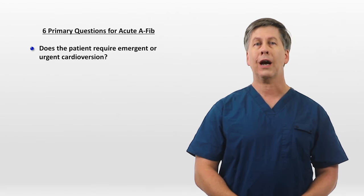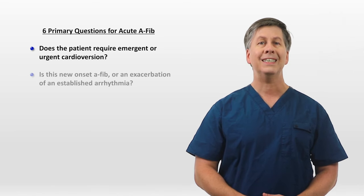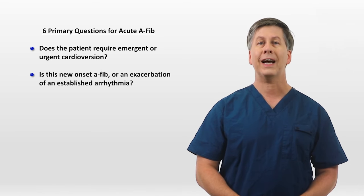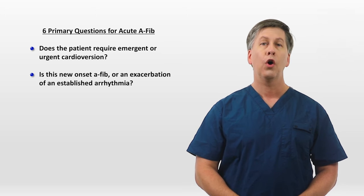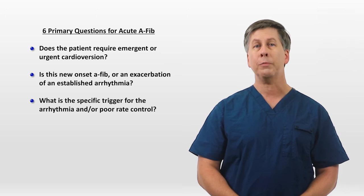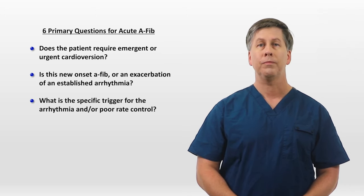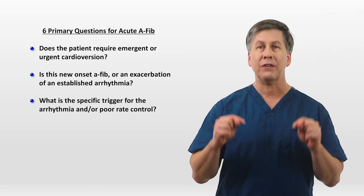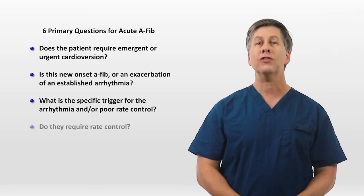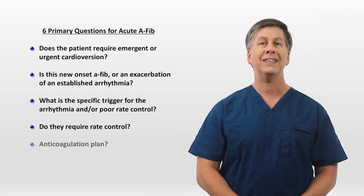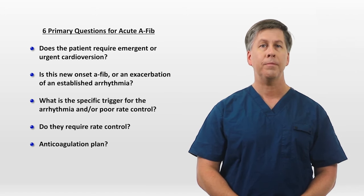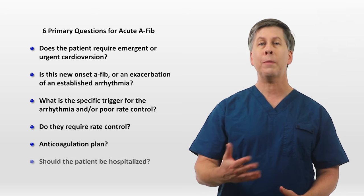The remainder of this video will cover six primary questions that the clinician needs to answer when caring for a patient with acute AFib: Does the patient require either emergent or urgent cardioversion? Is this new onset AFib or an exacerbation of an established arrhythmia? What is the specific trigger for the arrhythmia and/or poor rate control — that is, why is it happening at this specific moment? Does the patient require rate control? What is the anticoagulation plan? And last, should the patient be hospitalized?